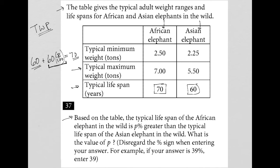The question asks: what is the value of p? So all I need to do is solve this algebraically. This becomes 60 plus — 10 goes into 60 six times, 10 goes into 100 ten times, I can simplify further: 2 goes into 6 three times, 2 goes into 10 five times — this becomes 3 over 5 times p equals 70.